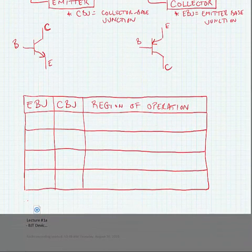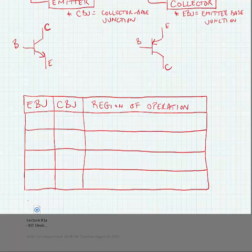As far as regions of operation go, we are going to define these based on forward or reverse biasing of the diode junction, or the emitter to base junction and collector to base junction. We'll use an F for forward bias, and an R for reverse bias.